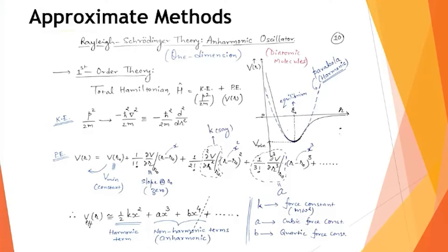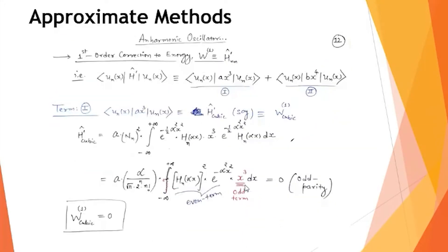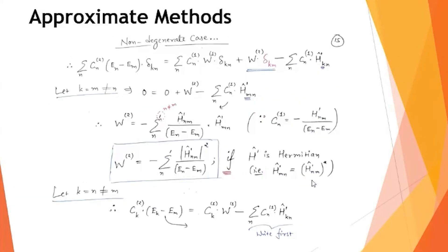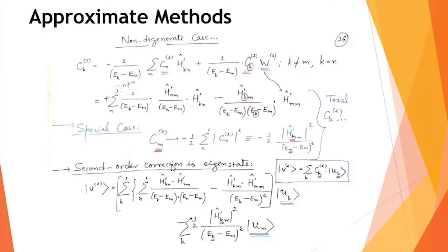The anharmonic oscillator example arises in real life — diatomic molecules, atomic interactions, atomic spectra, and diatomic spectra are examples where the potential energy has this form. The nearby exactly solvable problem is the harmonic oscillator. By solving the harmonic oscillator, we can find the anharmonic correction to diatomic or atomic molecular spectra. This was the practical example for the first-order term.